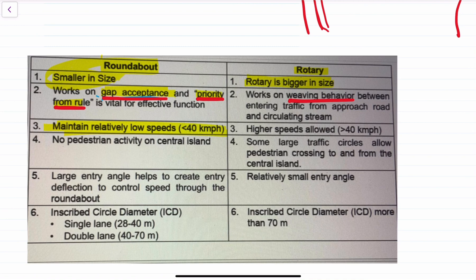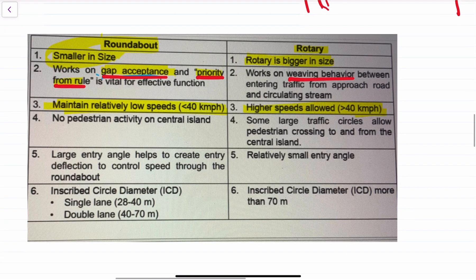The roundabout being smaller, a relatively low speed is maintained in a roundabout, while in a rotary a relatively higher speed is maintained.